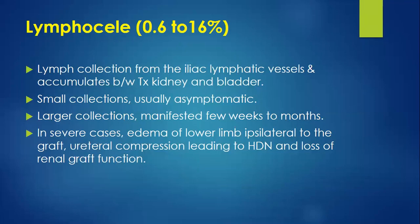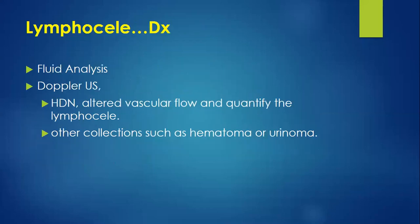Lymphocele has an incidence of 0.6 to 16%. It is lymph collection from the ehrlich passages and lymphatics, accumulating between the transplant kidney and the bladder. Small collections are usually asymptomatic. Large collections manifest weeks to a month post-transplant, with severe cases causing ipsilateral lower limb edema, ureteric compression leading to hydronephrosis, and loss of graft function. Diagnosis: aspirate fluid and send for creatinine — if creatinine is normal, it's a lymphocele. Doppler ultrasound shows hydronephrosis and altered vascular flow. Differential diagnoses include hematoma and urinoma.